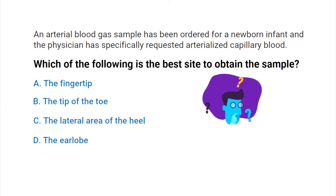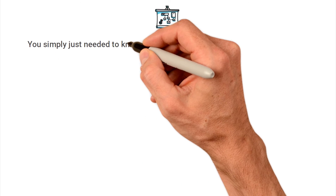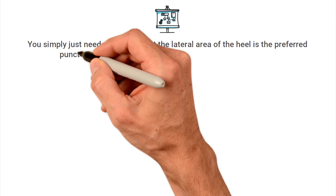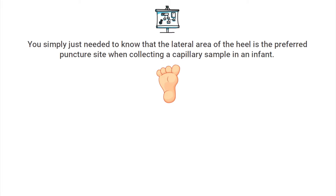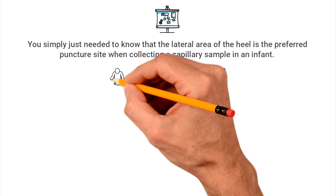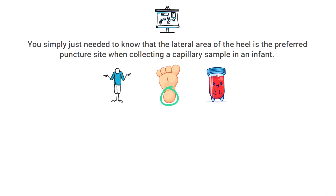To get this one correct, you simply needed to know that the lateral area of the heel is the preferred puncture site when collecting a capillary sample in infants. You could potentially use the infant's fingertip, toe, or earlobe if the lateral heel puncture is unsuccessful, but these are not the preferred sites. The heel is the preferred and typically most effective site to use in infants.